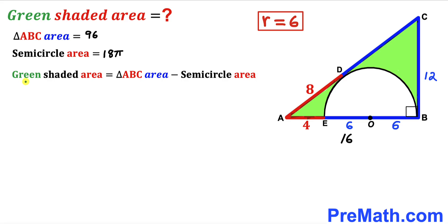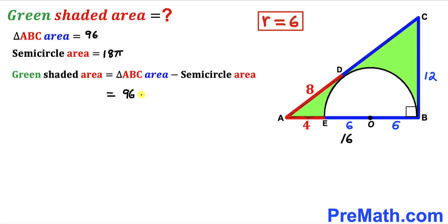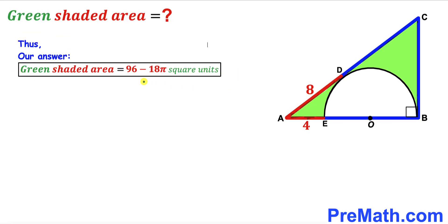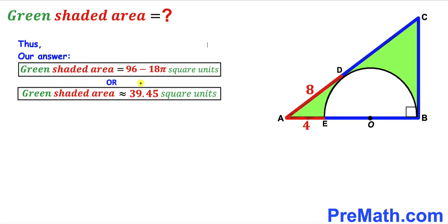Finally, the green shaded region area equals the triangle area minus the semi-circle area: 96 − 18π square units. This is approximately equal to 39.45 square units. Thanks for watching — please don't forget to subscribe to the channel for more exciting videos.